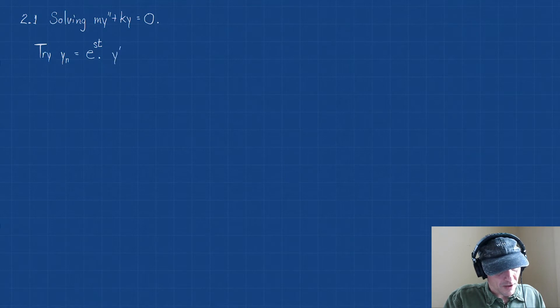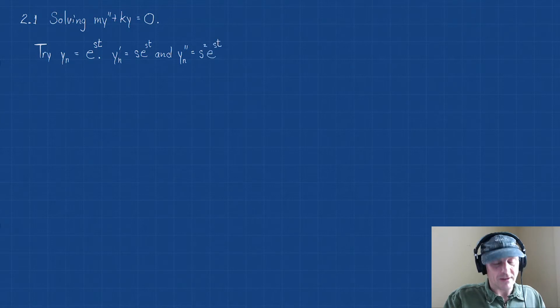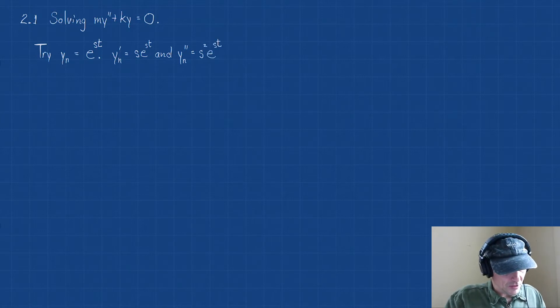So y prime, let's find that. y' = s·e^(st). And we need a second derivative, so that's going to be s²·e^(st). Now let's substitute all these in.